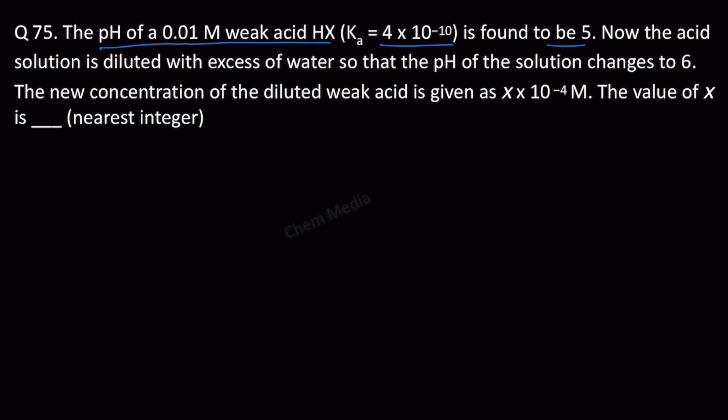Now the acid solution is diluted with excess amount of water so that the pH of the solution changes to 6. The new concentration of the diluted weak acid is given as X times 10 to the power minus 4 molar. What is the value of X? We need to find out the nearest integer.